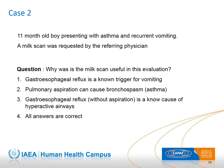This is a case of an 11-month-old boy presenting with asthma and recurrent vomiting, for whom a milk scan was requested. The milk scan is useful because: gastroesophageal reflux is a known trigger for vomiting; pulmonary aspiration can cause bronchospasm and asthma; and gastroesophageal reflux without aspiration is a known cause of hyperactive airways. All three reasons apply, making all answers correct.